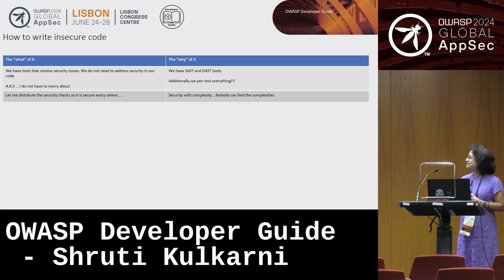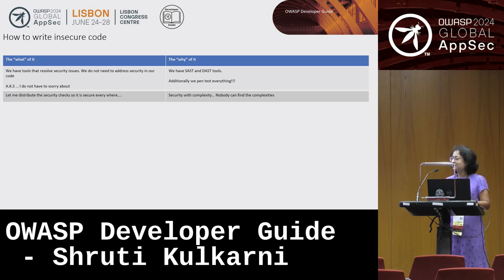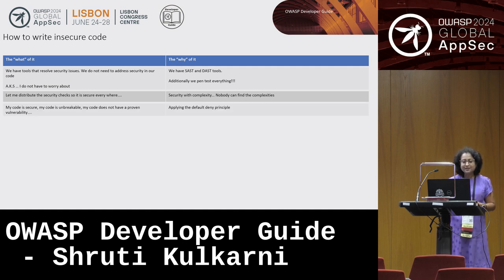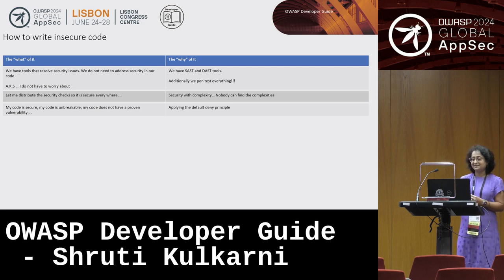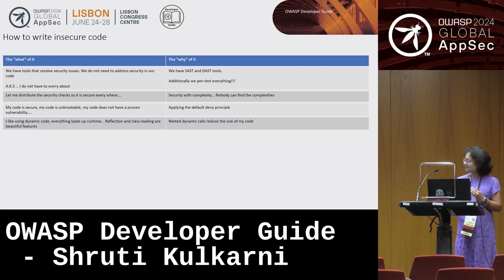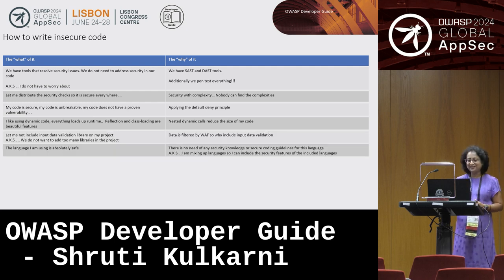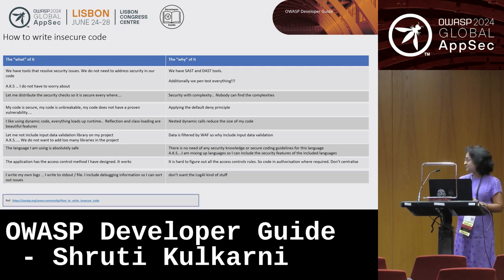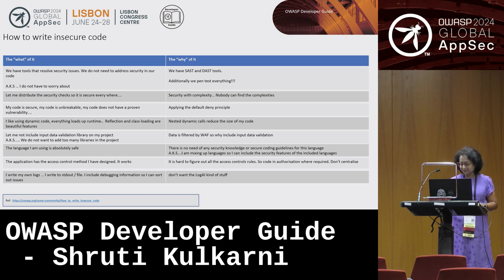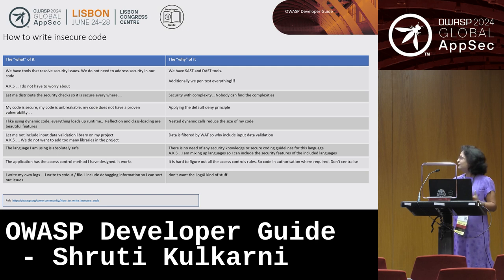Another way to write insecure code is to distribute security checks everywhere, making it more complex so nobody can find the vulnerabilities. Then claiming the code is unbreakable and applying a default-deny principle. There are lots of examples of how we can write insecure code — many from personal experience — and there's an OWASP page with a project that also covers many of these examples.